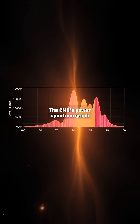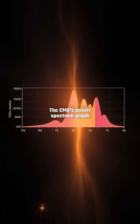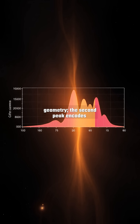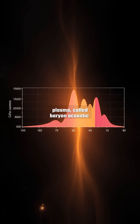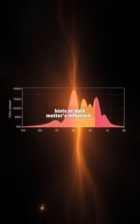The CMB's power spectrum graph reveals fundamental cosmic parameters. The first peak confirms the universe's flat geometry. The second peak encodes baryon density. These patterns stem from sound waves in the primordial plasma, called baryon acoustic oscillations, or BAO.